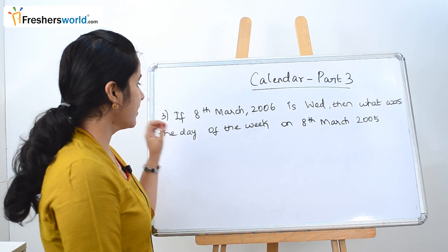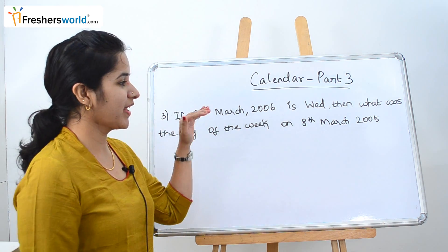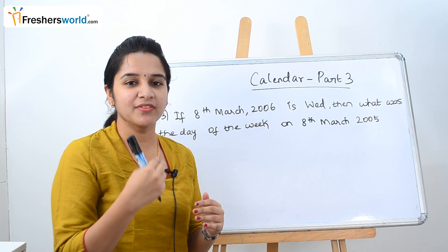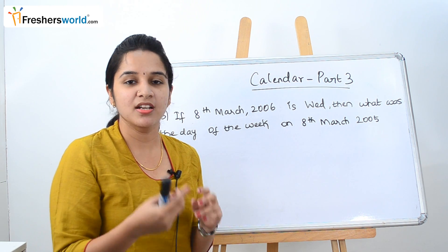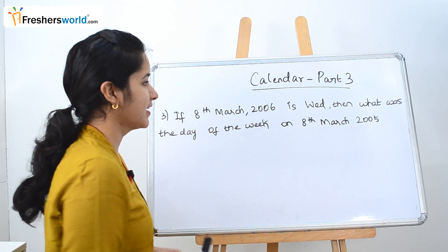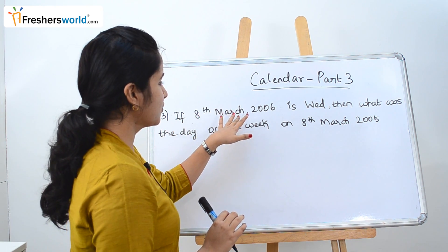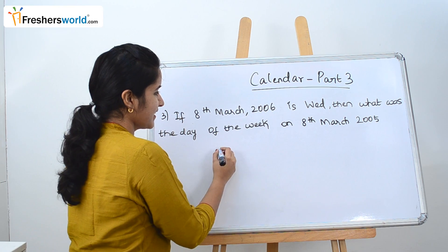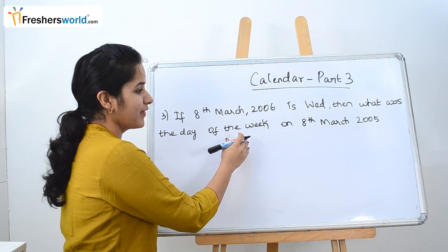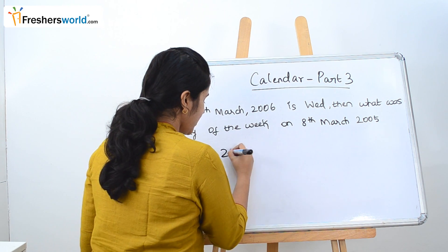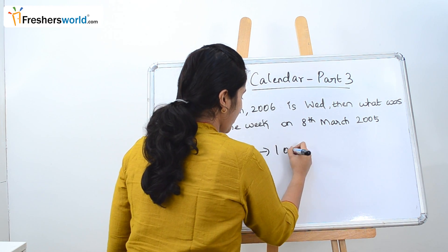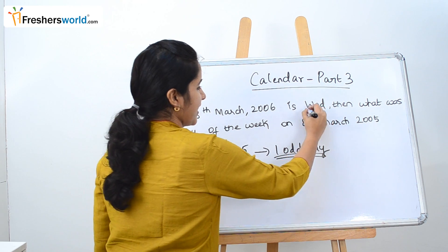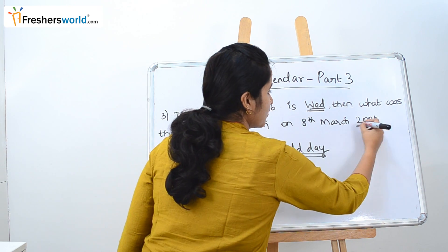The next question: if 8th March 2006 is Wednesday, what was the day of the week on 8th March 2005? Previously we went forward and added odd days; now we subtract. Since the date is 8th March 2006 — February has already been crossed — we only consider the odd days of 2005. As 2005 is not a leap year, there is only 1 odd day. Since 2006 is Wednesday, we subtract 1 day to get the 2005 date.